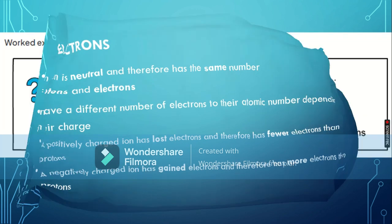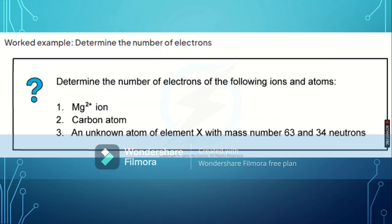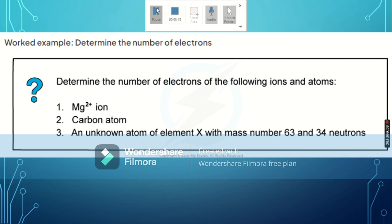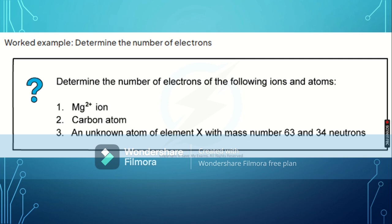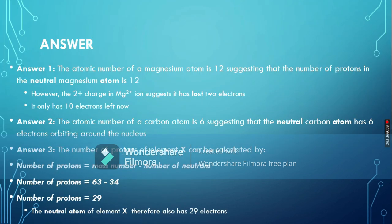Now the same elements are used to calculate the number of electrons. For the Mg2+ ion: the atomic number of magnesium is 12, meaning the neutral magnesium atom has 12 protons and 12 electrons. The 2+ charge indicates it is a positively charged ion that has lost 2 electrons.